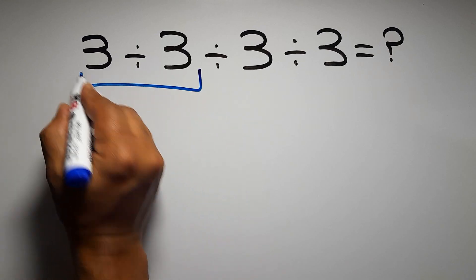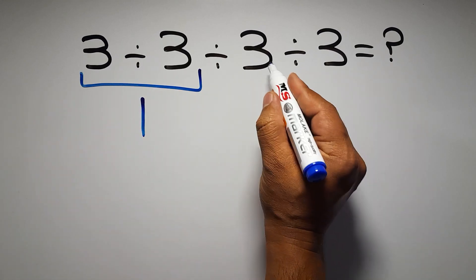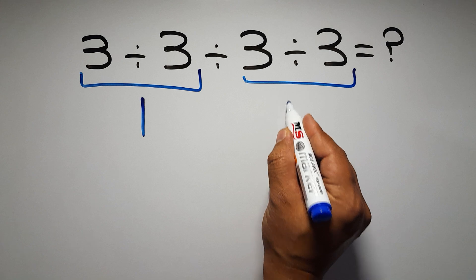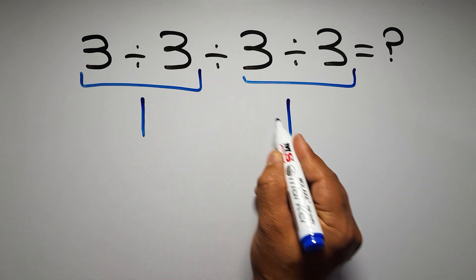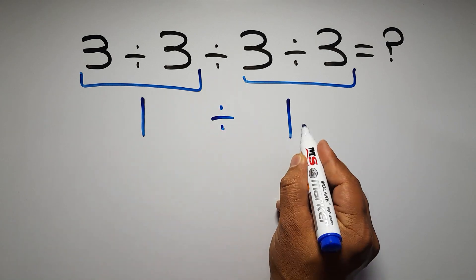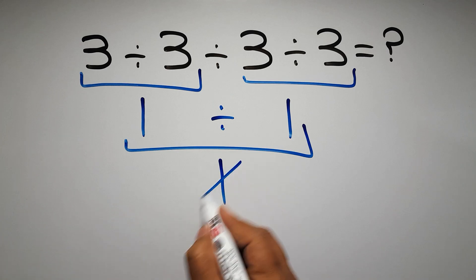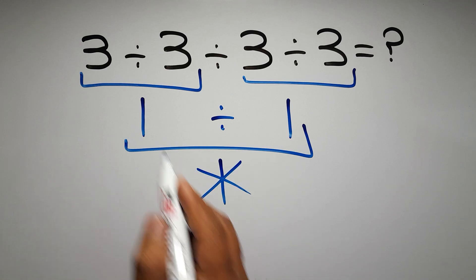3 divided by 3 gives us 1, and again here we have 3 divided by 3, so 1 divided by 1 which gives us 1. But this answer is not correct because according to the order of operations, when we